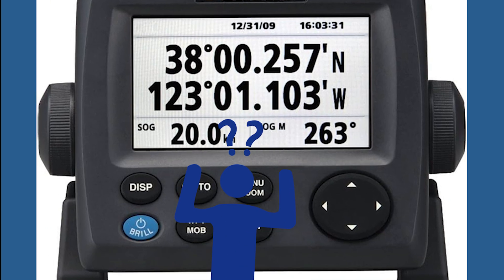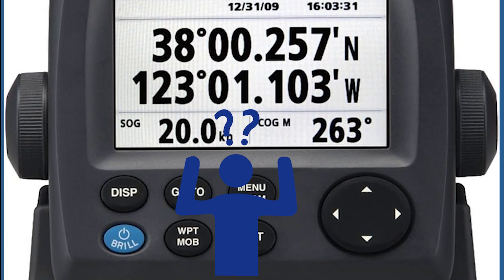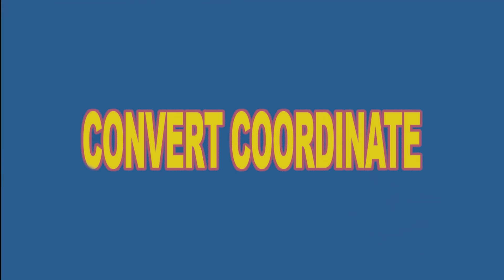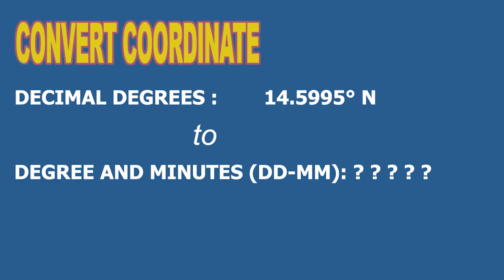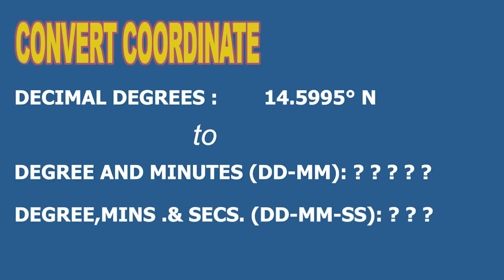Ever looked at your GPS and got confused by all those decimals and symbols? In this quick video I'll show you how to convert coordinates from decimal degrees into the two formats we often use in navigation: degree and minutes or degree minutes and seconds, accurately and easily. Let's get started.